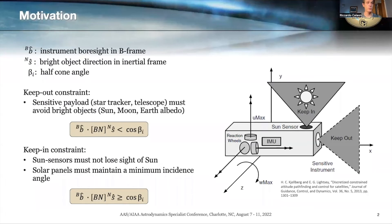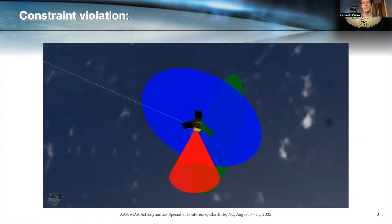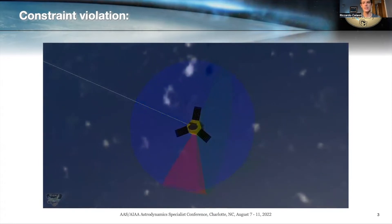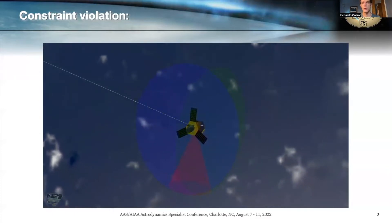Just a couple of words to define the problem of constrained attitude maneuvering. It consists of maneuvering a spacecraft subject to rotational constraints — there can be keep-out zones that we want certain body-fixed instruments not to point to, and vice versa, keep-in constraints where certain body-fixed instruments must remain within a certain angular distance from a celestial object. Here you can see a spacecraft subject to both types of constraints, and when these cones light up it means the constraint is being violated. This shows how easy it is to violate these constraints if they're not accounted for.